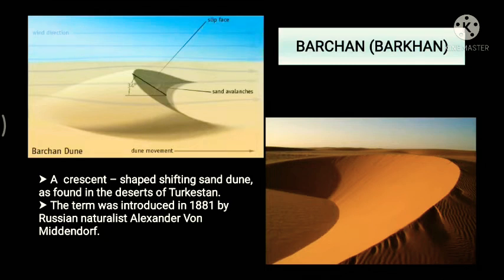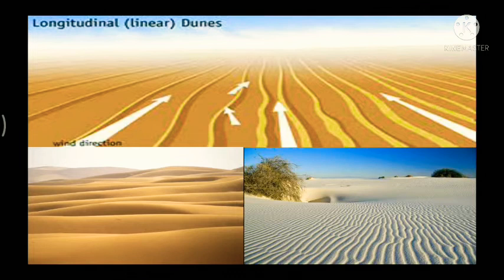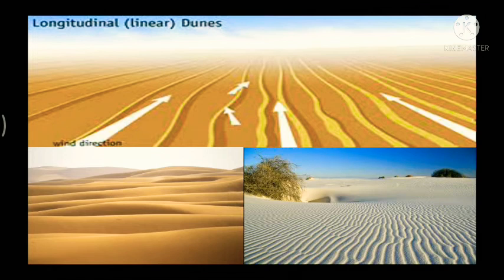The second type is longitudinal dunes, which become more prominent near the Indo-Pakistan boundary. These are also called linear dunes and look like large parallel ridges. They are straight and long, unlike barchans. Longitudinal dunes form when sand is not in excess and wind blows in one constant direction over an extended period of time, causing them to migrate in the direction of the wind.